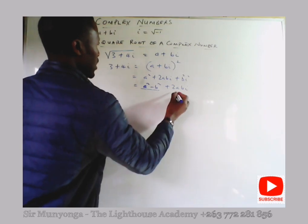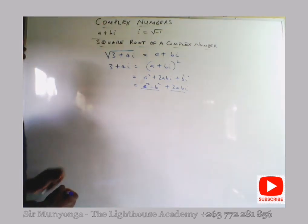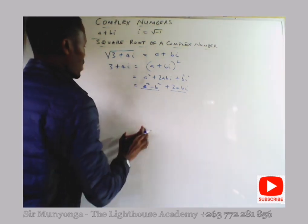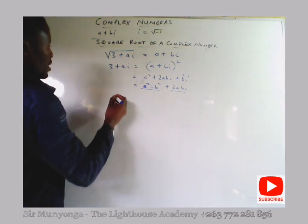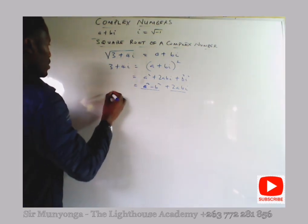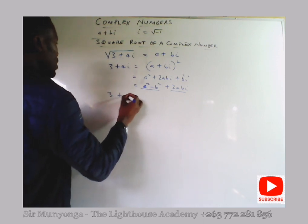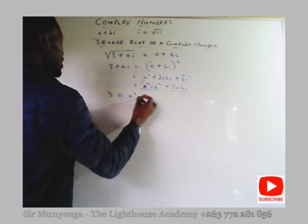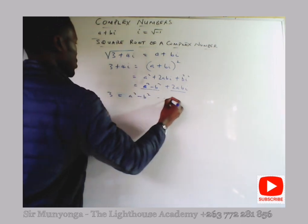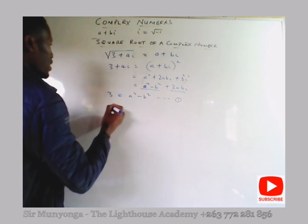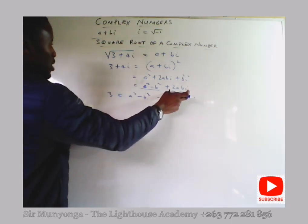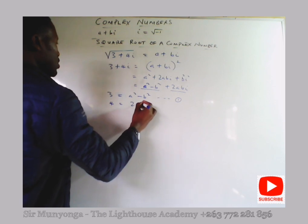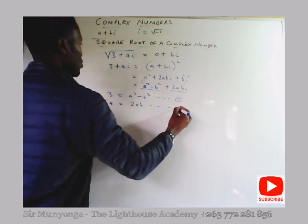We end up with a squared minus b squared plus 2abi. Grouping real and imaginary parts: since 3 plus 4i equals this expression, equating real parts gives equation one: 3 equals a squared minus b squared. Equating imaginary parts gives equation two: 4 equals 2ab.